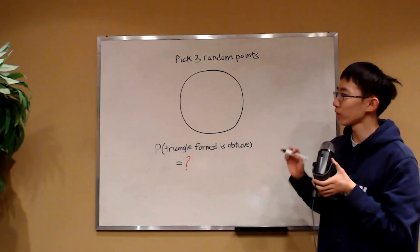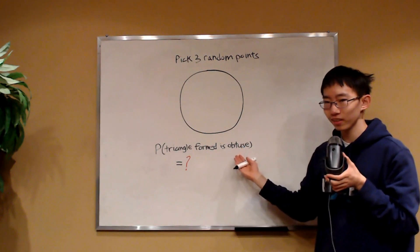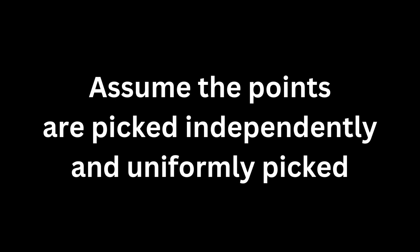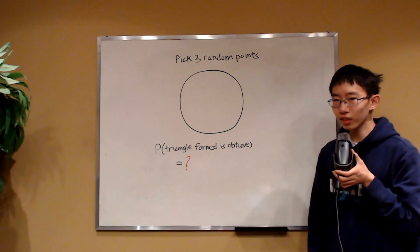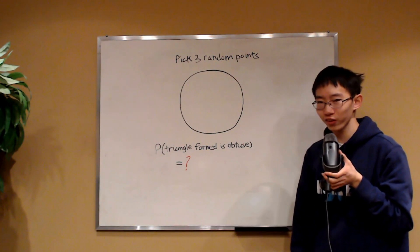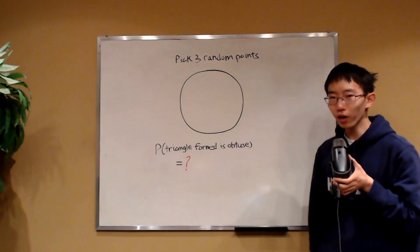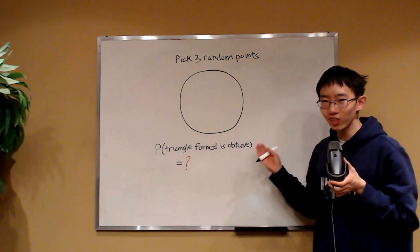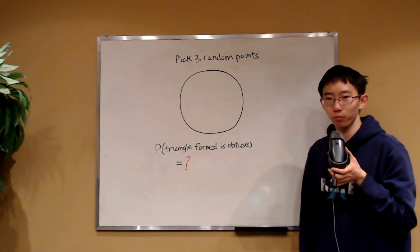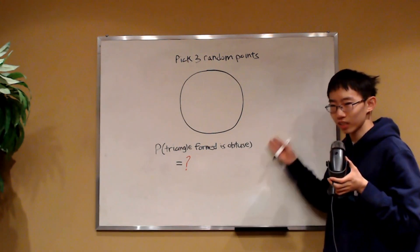Behind me is a circle, and suppose that we pick three random points. What is the probability that the triangle formed is obtuse? This problem is actually quite interesting because it involves quite a bit of wishful thinking and some special placements of the three points. The goal of this video is to solve this particular problem, and I also want you to learn a very special problem-solving strategy. So let's get straight into it.